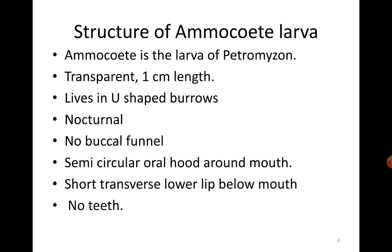Once fertilization occurs, the eggs will hatch in about three weeks, forming a very minute, transparent larva called Ammocoetes. This larva measures about one centimeter in length and is transparent. When they hatch, they are very different from their parents — Petromyzons are parasitic forms that attach to larger fish with the help of their suctorial mouth. But these larvae, the Ammocoetes, are free-living forms that live in burrows.